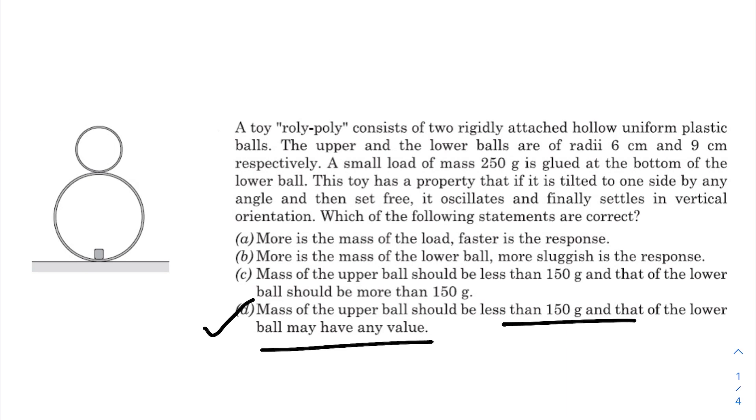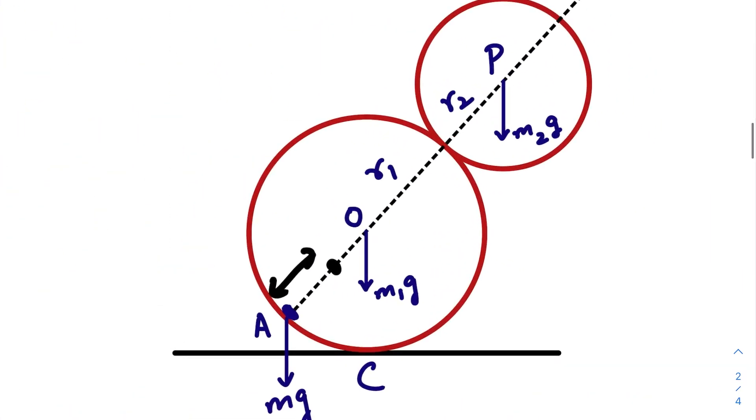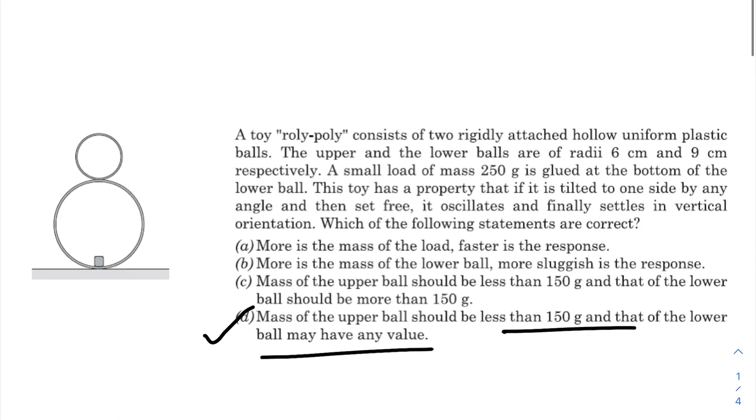Now let us check option A and B. More is the mass of the load, faster is the response. Now let us check this diagram once again. If somehow we increase the mass of this load, then the center of mass will shift towards A, hence increasing the perpendicular distance with respect to this pivot point, hence increasing the torque. That will increase alpha. So the initial response would be quicker if you increase the value of the load. So option A is also correct.